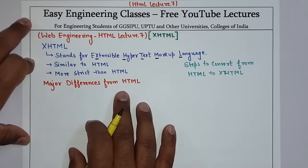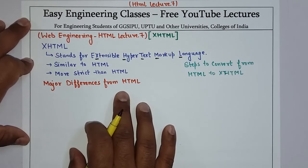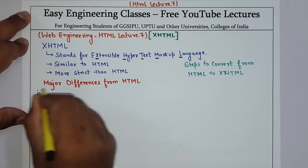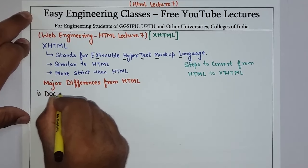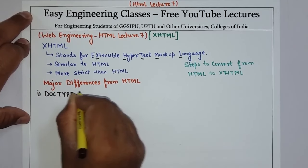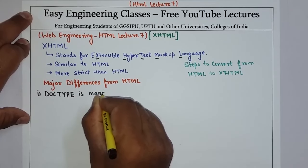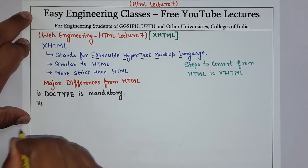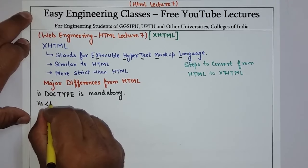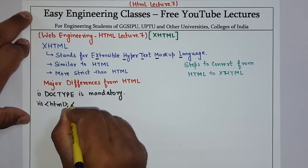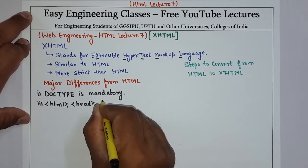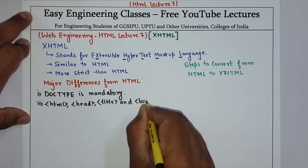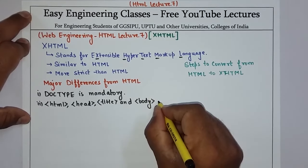There are certain differences from HTML. The first difference is that in XHTML, the DOCTYPE declaration is mandatory, which is not the case in HTML. The second difference is that certain tags — HTML, head, title, and body — these four basic tags of HTML are mandatory in XHTML.